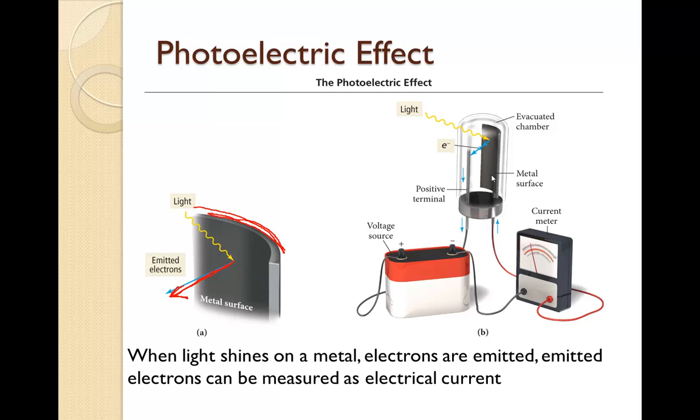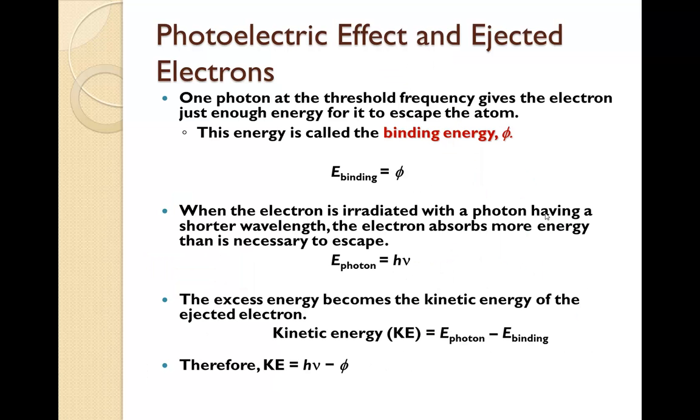We can capture how many electrons are given off during this process with a current meter. One photon has a threshold frequency that gives the electron just enough energy to escape the atom. This is called the binding energy.